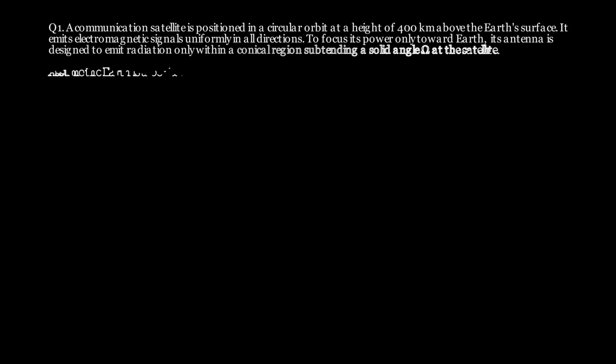Let's now apply our understanding of solid angles to a real-world physics problem. A communication satellite is placed in a circular orbit 400 km above Earth's surface and to avoid wasting energy, its antenna focuses radiation only within a specific conical region thus subtending a solid angle omega. And, we are also told that Earth is a perfect sphere of radius 6,378 km.